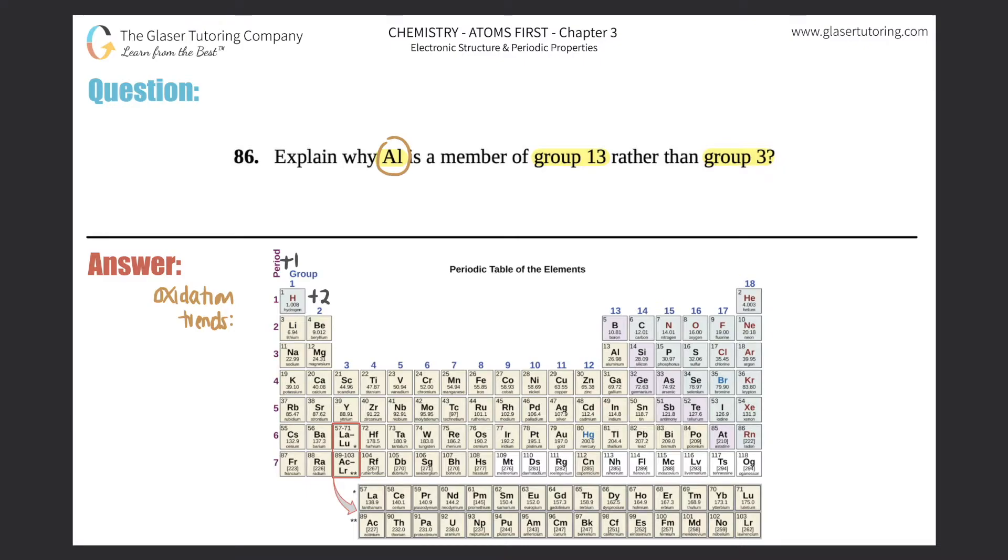Group 2 is always +2, and then once you skip over your transition metals, group 13 becomes a +3. The trend continues: plus or minus 4, then negative 3, negative 2, negative 1, and 0. Aluminum is over here.